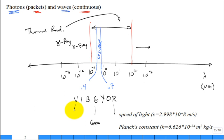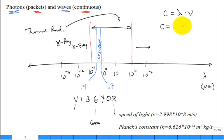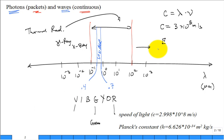Recall that the speed of light equals lambda times nu (wavelength times frequency). The speed of light in a vacuum is 2.998 × 10⁸ meters per second. When light enters another material like glass or a gas, it slows down slightly — in a vacuum is the fastest it gets.